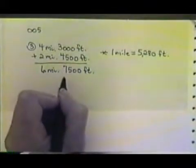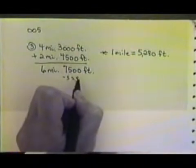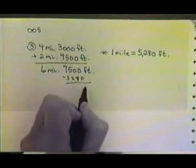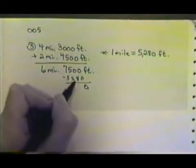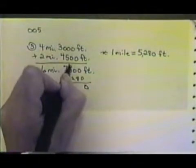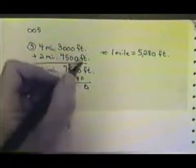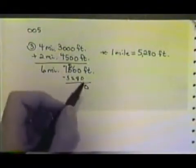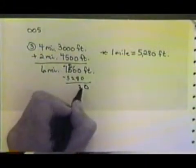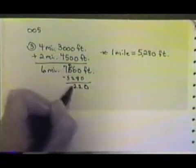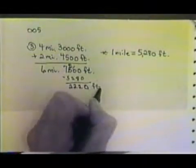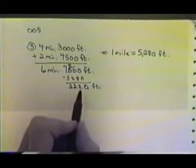Let's take 5,280 feet away from this. If we did that, 0 from 0 would leave 0. We can't subtract 8 from 0, but we'd borrow 1 from the 5, which would leave us with a 4. And we put the 1 that we borrowed over here. That would give us the 10. 8 from 10 leaves 2. 2 from 4 leaves 2. And 5 from 7 leaves 2. And so, we'd have 2,220 feet left.